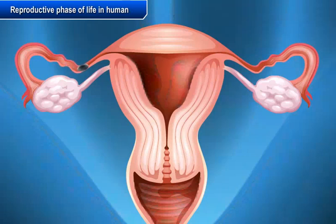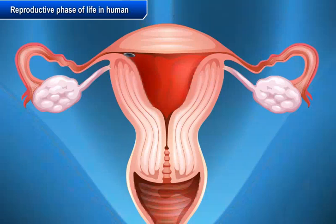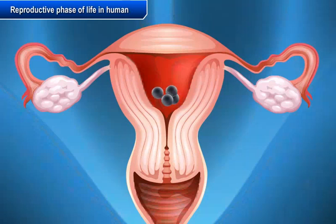One matured ovum is released once in every 28-30 days. Both ovaries release the ovum alternatively every 28-30 days. During this period, the wall of the uterus becomes thick so as to receive the fertilized egg, which is formed as a result of the fusion of male and female gametes. If fertilization occurs, the fertilized egg begins to develop, resulting in pregnancy.